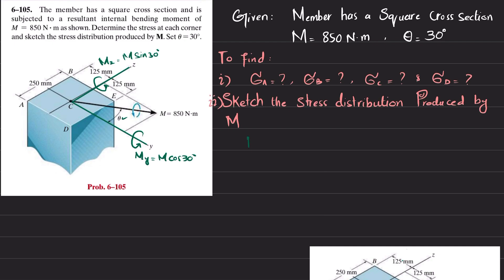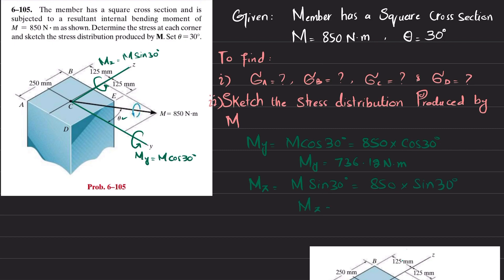We will find Mz and My. My equals M·cos(30°), and M is given as 850 newton-meters, so 850 times cos(30°) gives My equal to 736.12 newton-meters. And Mz equals M·sin(30°), so 850 times sin(30°) equals 425 newton-meters.